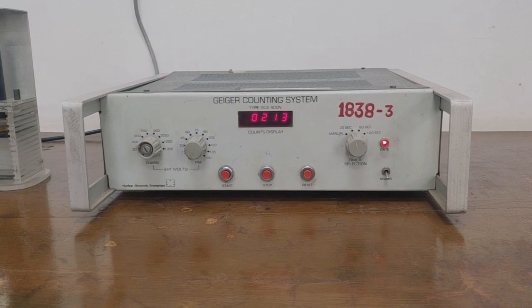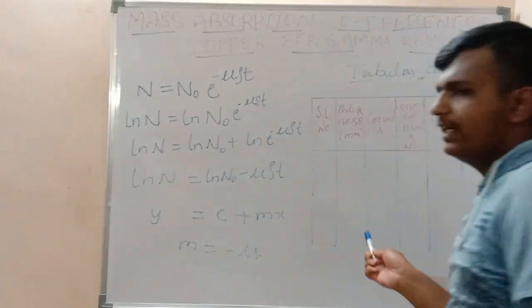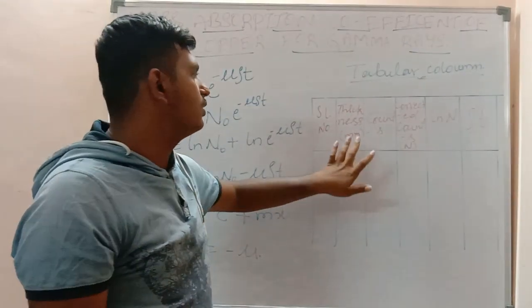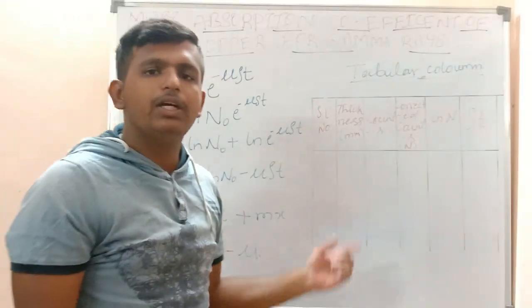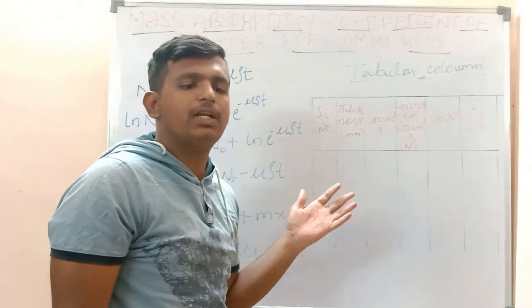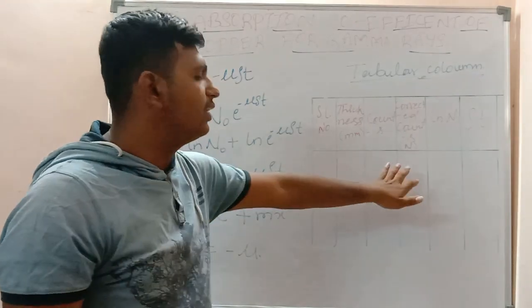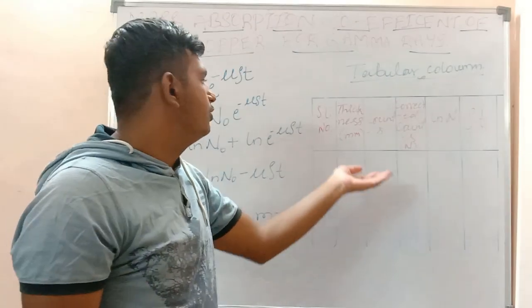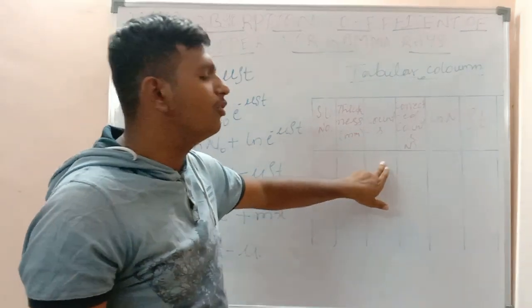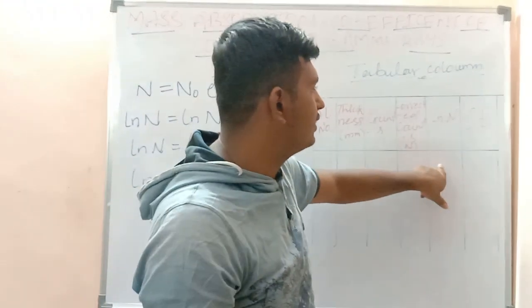Let's see how to take the readings. Once everything is set up, measure the thickness of the given copper sheet using the screw gauge. We take copper sheets of uniform thickness. The first reading is taken without any copper sheet. The corrected counts are the counts obtained minus the background counts.